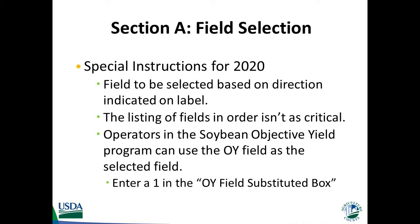The idea is for the operator to identify the location of all the planted fields in the operation, then select the field that is going to be the most geographically extreme in the direction indicated on the label. For example, if the label said north, we would want to identify the northernmost field planted to the target crop in the operation, and that would be our selected field. If the direction indicated on the label was southwest, then we would want to identify the most southwesterly field planted to the target crop on the operation, and that would be our selected field.